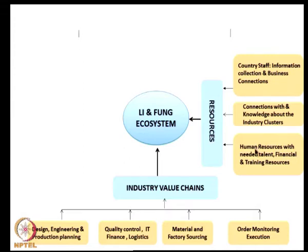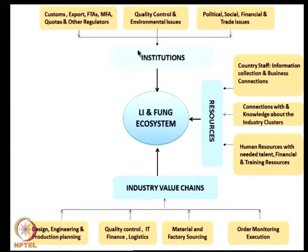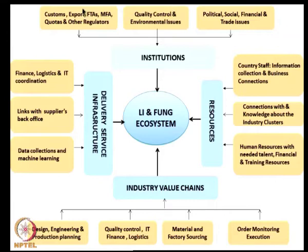The resources include Li and Fung staff in each country for information collection and business connections, connecting people and passing information to headquarters, knowledge about industry clusters, industry partners, human resources with needed talent, and financial and training resources. Institutions include customs, free trade agreements, multi-fiber agreements, and other regulators covering quality control, environmental issues, and political, social, financial, and trade issues. Delivery mechanisms include finance, logistics, IT coordination links with suppliers, back office and data collection, and machine learning.